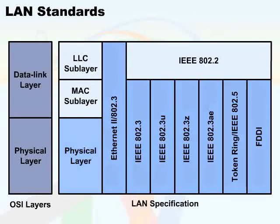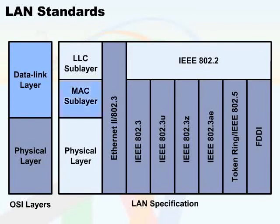The data link layer is actually separated into two separate components for the purposes of Ethernet. We see a MAC sublayer, which provides transitions down to the physical layer, and we see the logical link control, or LLC sublayer, which provides transitions up to the next layer in line, which is layer 3, or the network layer.